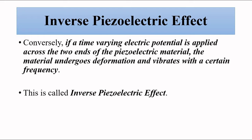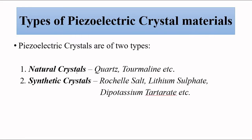These two phenomena are used in various sensing and transduction methods to convert suitable physical parameters into electrical signals. Piezoelectric materials can be categorized into two forms: natural crystals like quartz and tourmaline, and synthetic crystals like Rochelle salt, lithium sulfate, and dipotassium tartarate, which are the commonly used piezoelectric crystals.